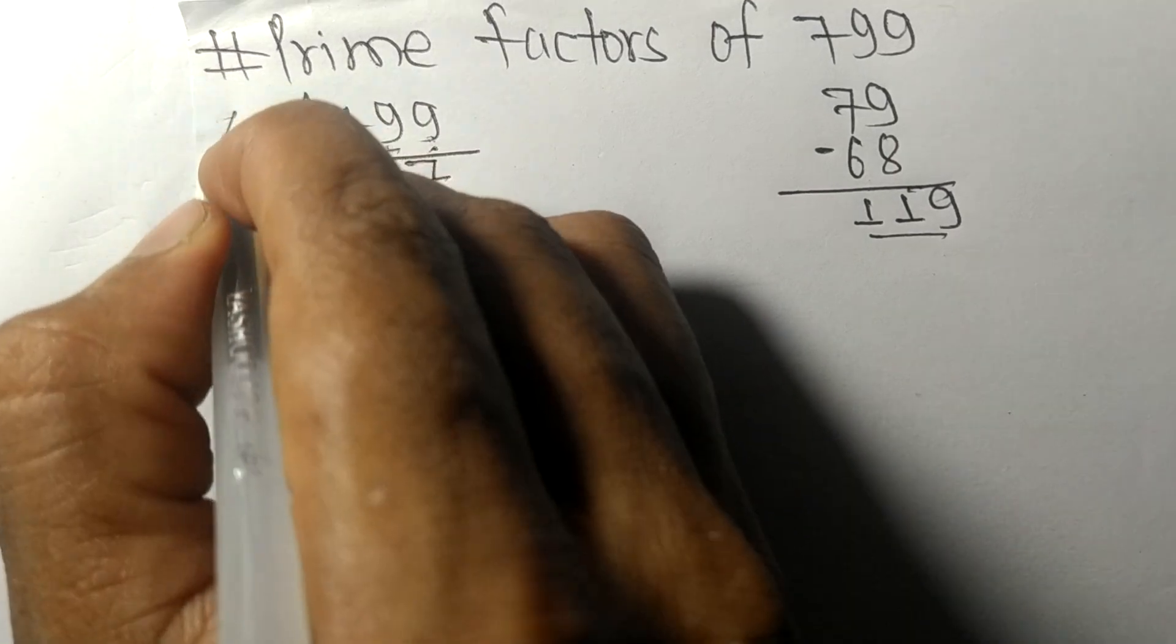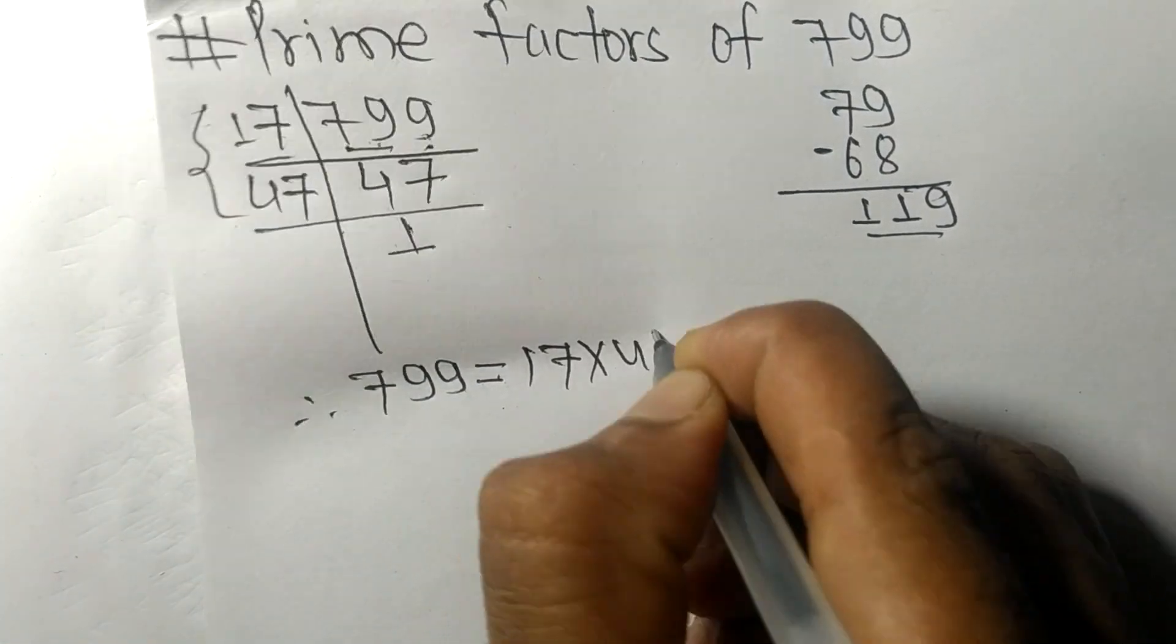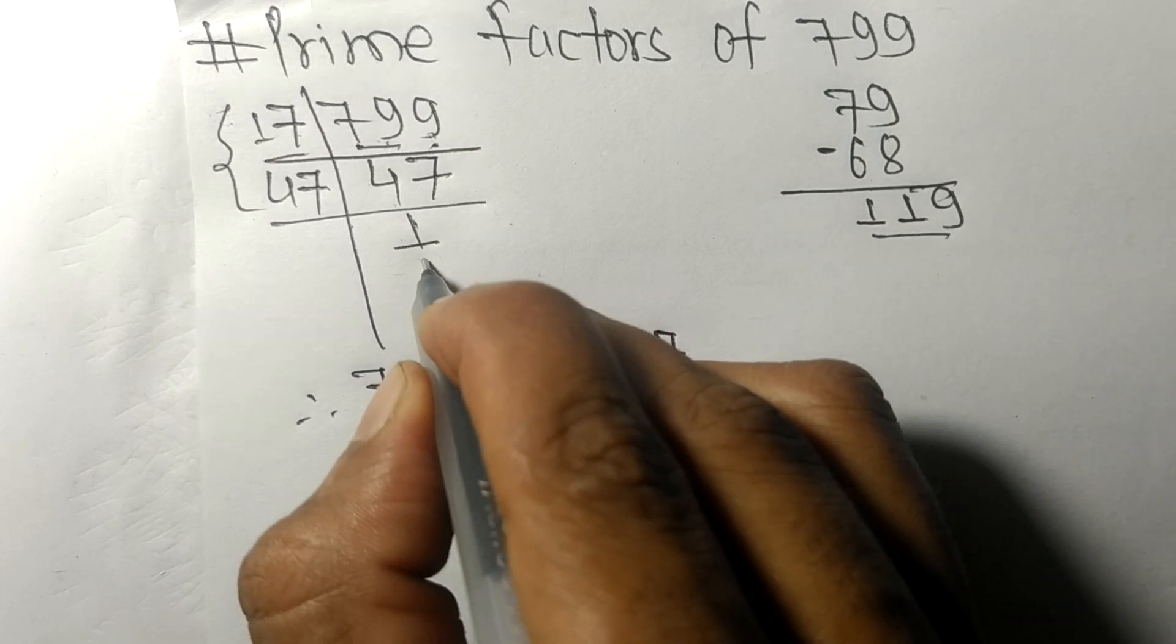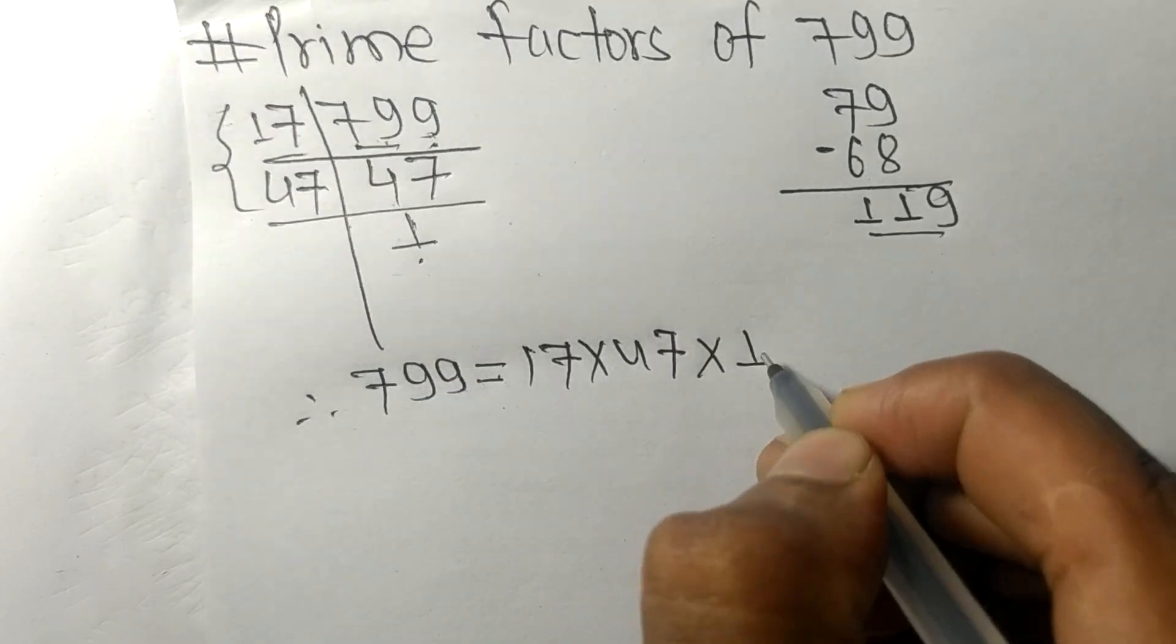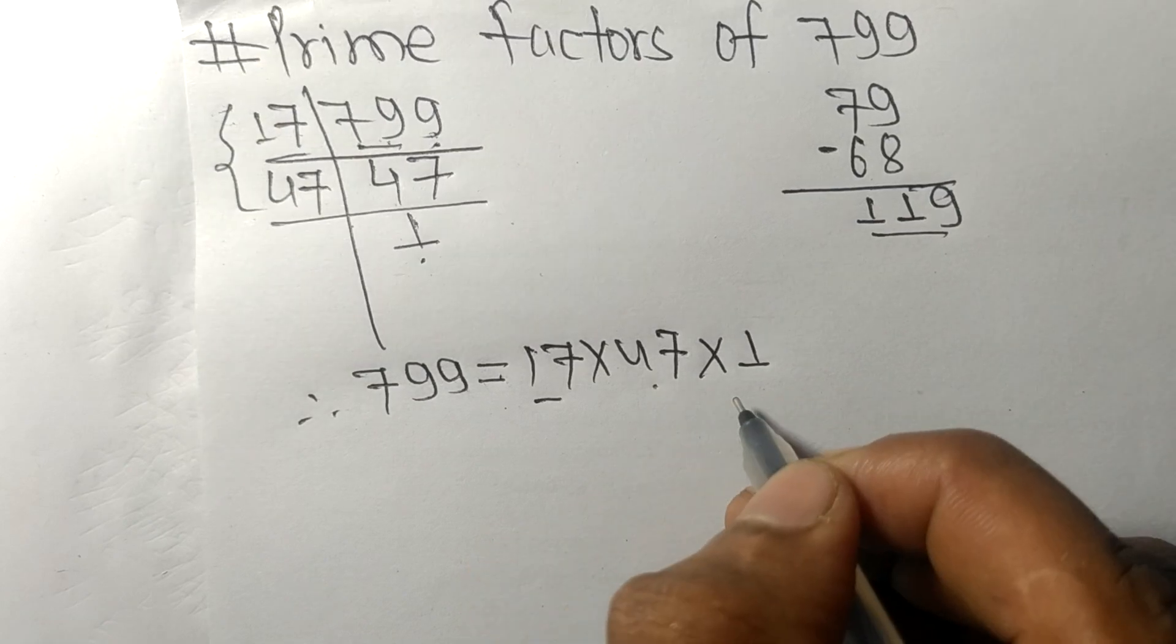Therefore 799 is equal to, from this side it is 17 times 47. From here it is 1, so 17, 47, and 1 are the prime factors of 799.